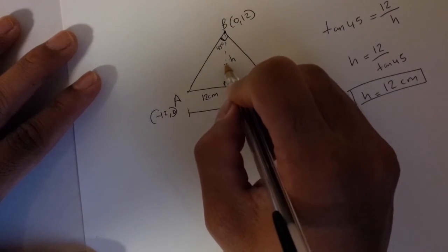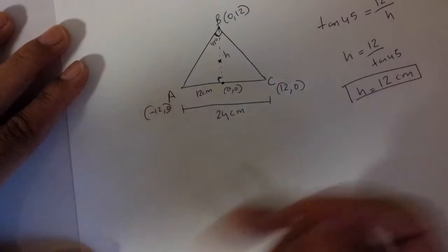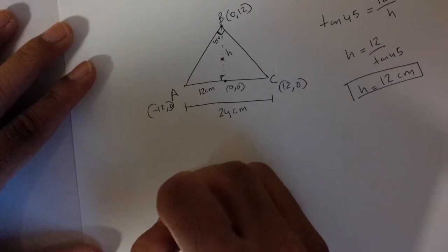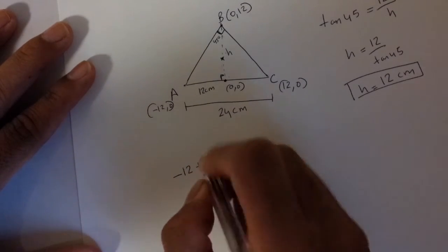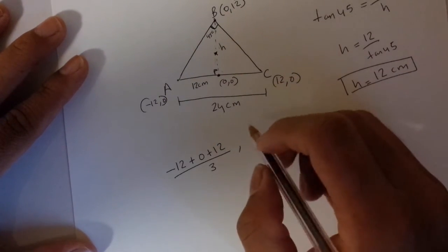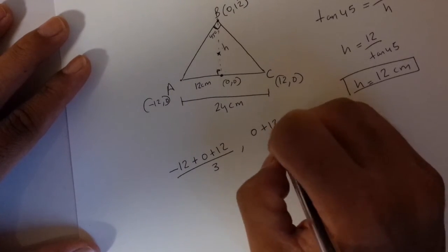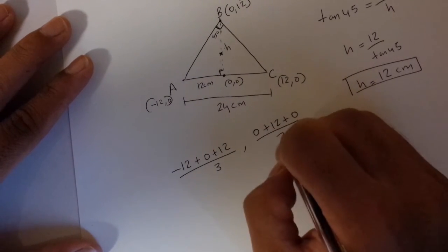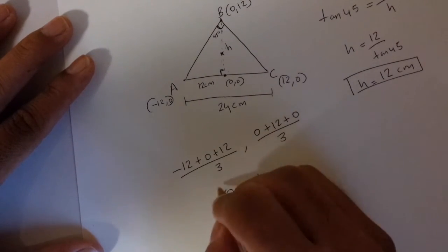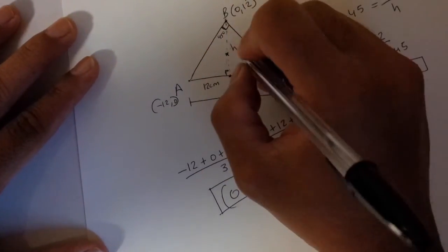Now you're supposed to find the coordinates of the center of mass. We can do that by using the formula for median of a triangle which is for the x coordinate it should be minus 12 plus 0 plus 12 divided by 3, and the y coordinate would be 0 plus 12 plus 0 divided by 3. This would be equal to 0 and this would be equal to 4. These are the coordinates of the center of mass of this triangular lamina.